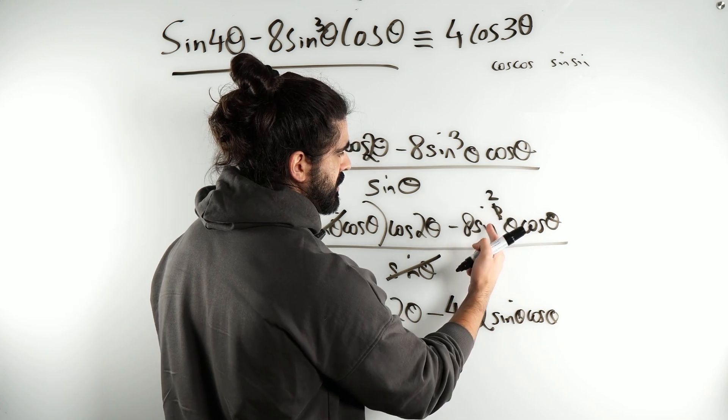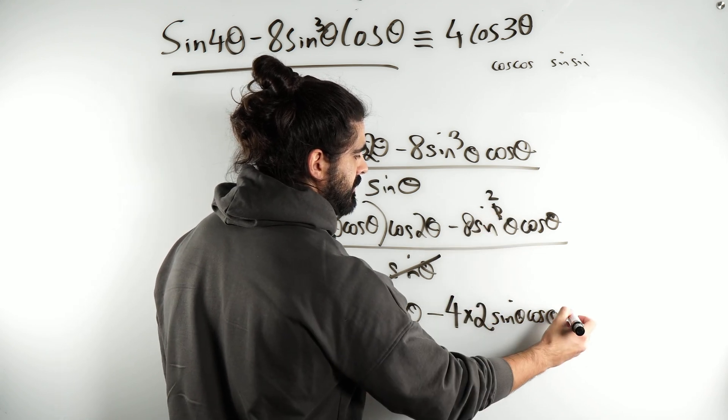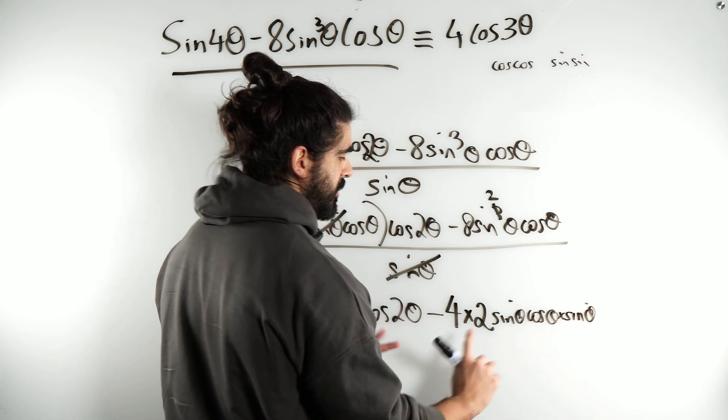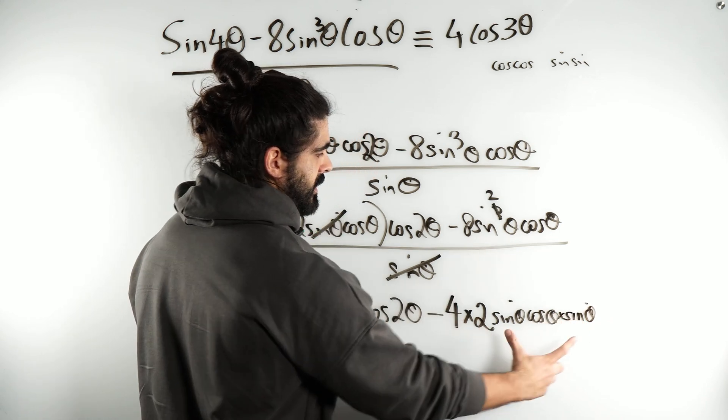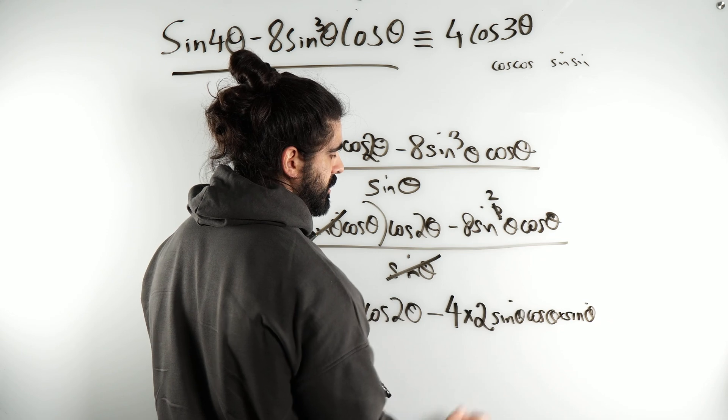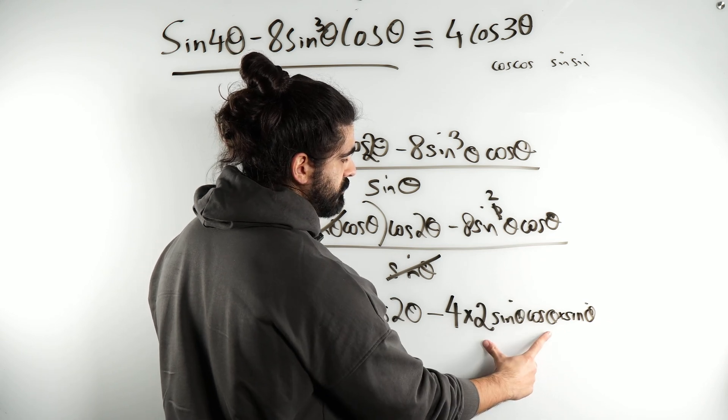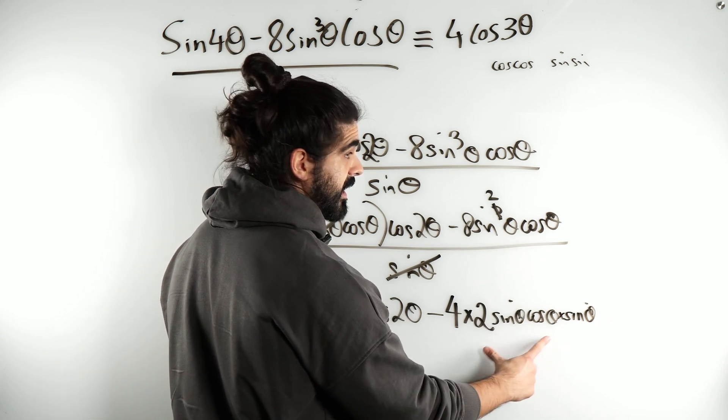I can write sine theta cos theta. Yeah, but remember it was sine squared, right? So, if I just have sine, I'm going to write sine theta here. Nothing's changed. Nothing's changed. 8 sine squared cos. Now, this I can rewrite as sine 2 theta.